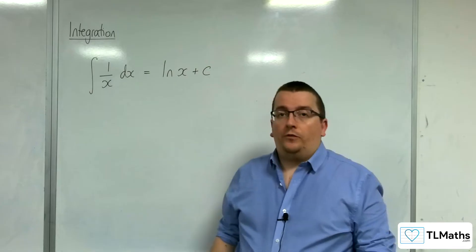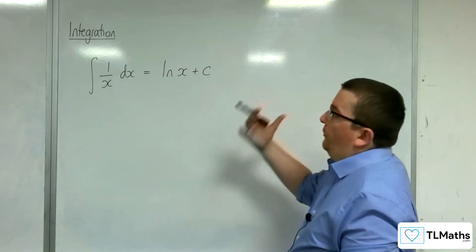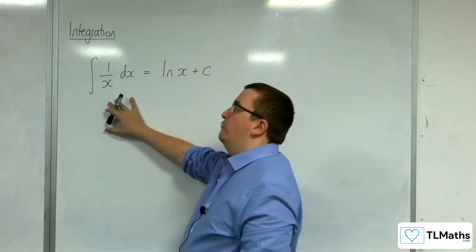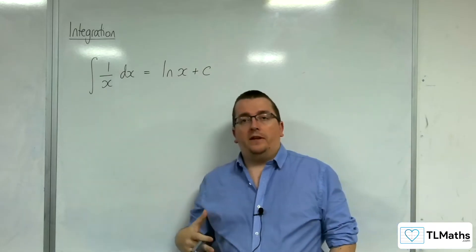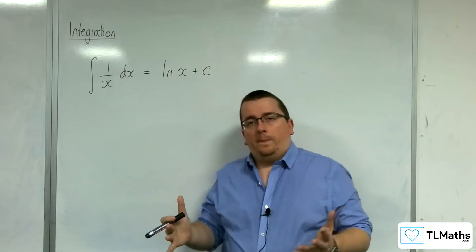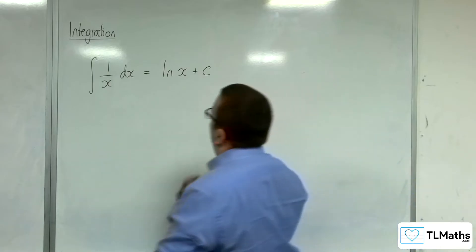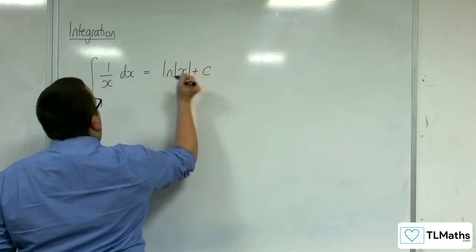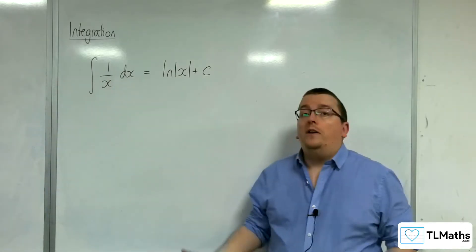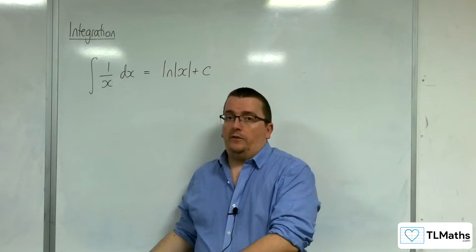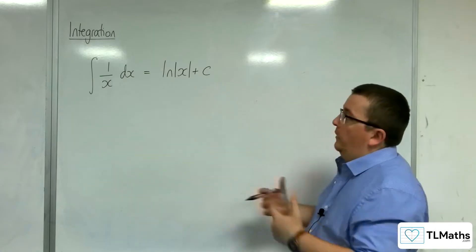The question I want to address in this video is, we're told that the integral 1 over x dx is equal to the natural log of x plus c. However, we're also told that it should be the log of modulus of x plus c. Now why is this the case? Why isn't it just the natural log of x? Why is it log of mod x?